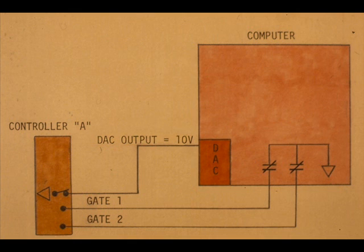For DDC control, the computer action is as follows. The computer applies the proper DAC output voltage for a specific controller, 10 volts to controller A, for example. The computer then turns on both controller A gates.